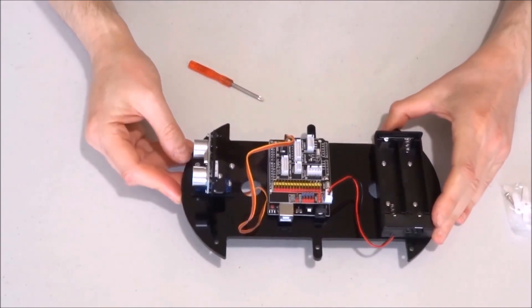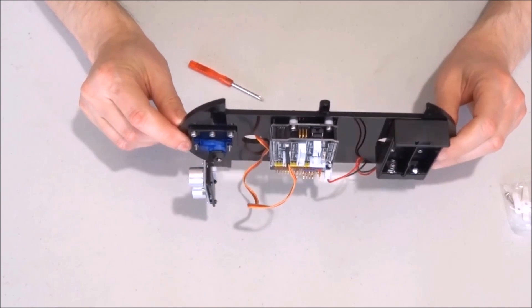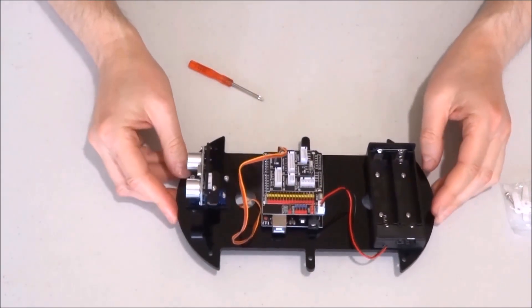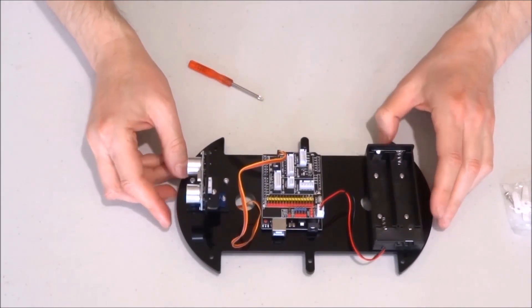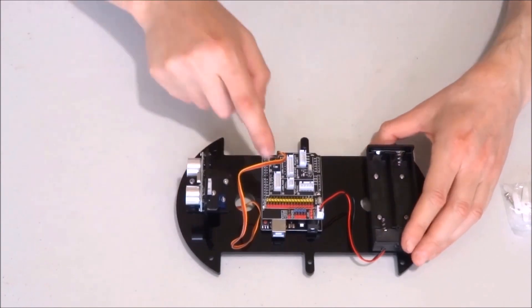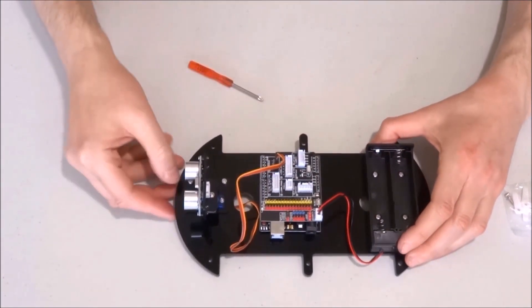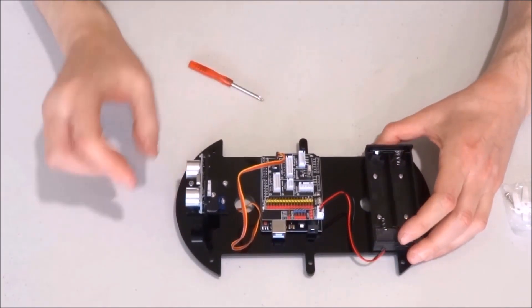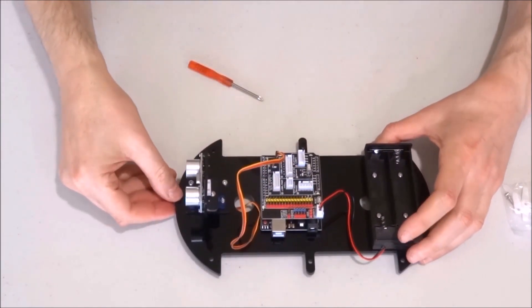This pretty much should conclude everything that needs to be done on the upper layer of the chassis. Now I can start connecting all the cables between the lower and the upper layer and then join the two layers together.